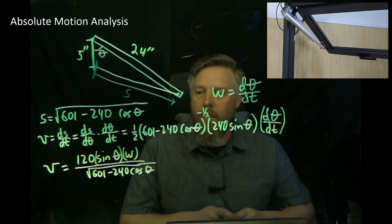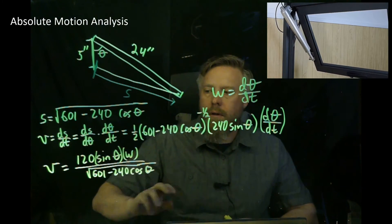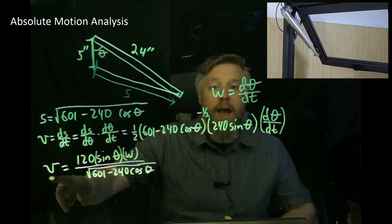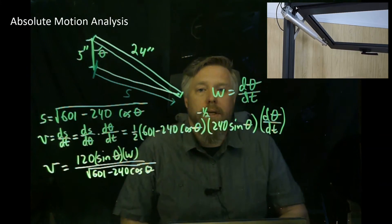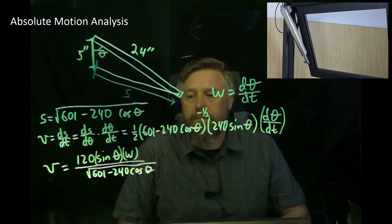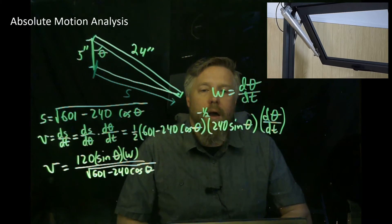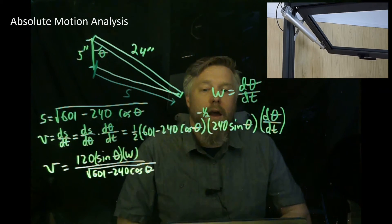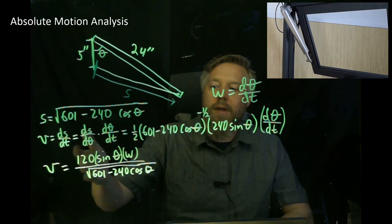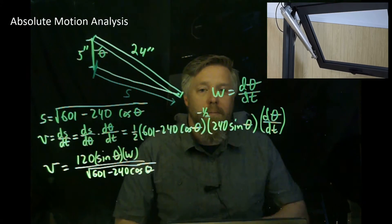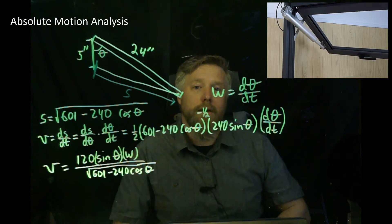For any given theta and any given omega, we can determine how fast our linear actuator has to move to get the window to operate with that given omega. If we had thetas and omegas, we'd plug them in and get how fast the linear actuator is going. If we knew how fast the linear actuator was going and we had a theta, we could solve for omega, the angular velocity of the window. Let's move on to another example problem.